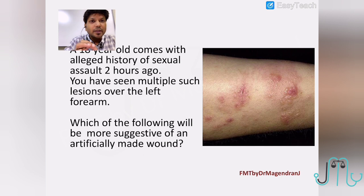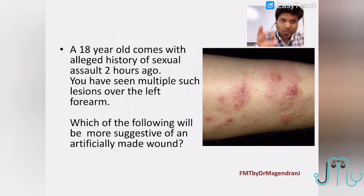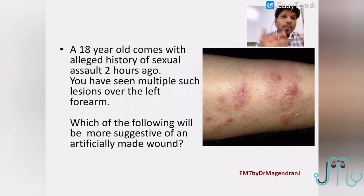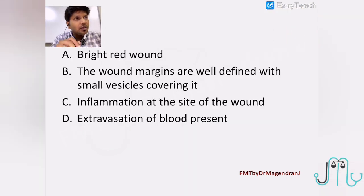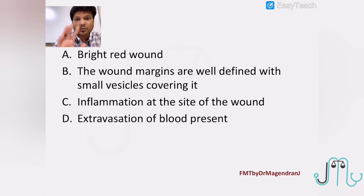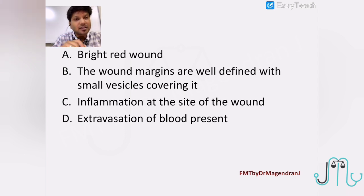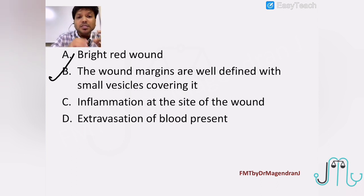An 18-year-old girl comes with a history of sexual assault from two hours ago, and multiple lesions are seen on the left forearm. Which finding is more suggestive of an artificially made wound — a pseudo-bruise? Pseudo-bruises are produced by application of calotropis juice or semi-carpus anacardium juice. A bright red wound is more suggestive of a true bruise, not a pseudo-bruise. Wound margins that are well defined with small vesicles covering the surface — yes, this is suggestive of a pseudo-bruise. A true bruise will have irregular, not well-defined margins. Inflammation at the site and excavation of blood are both suggestive of a true bruise.